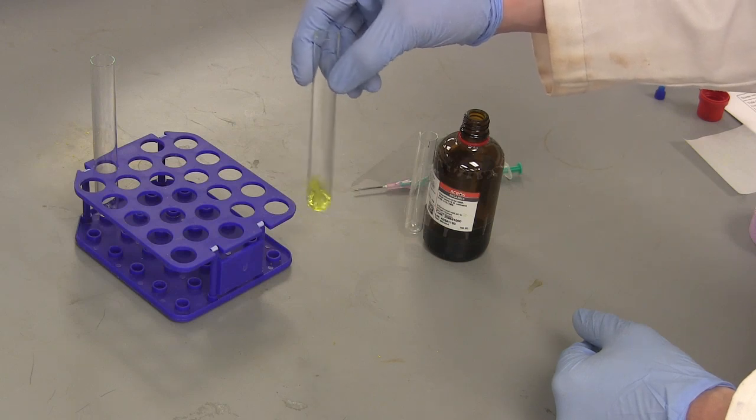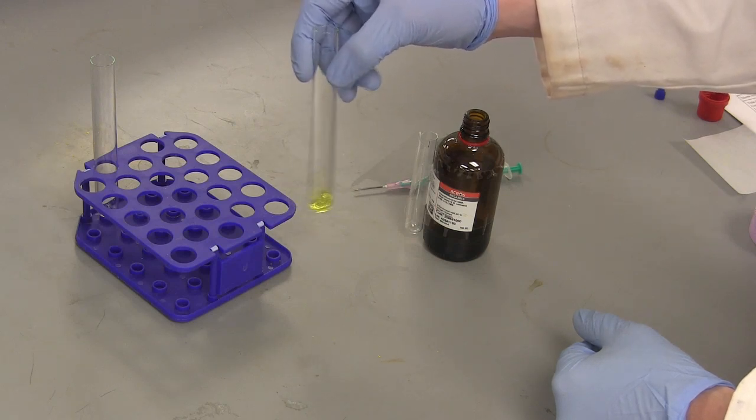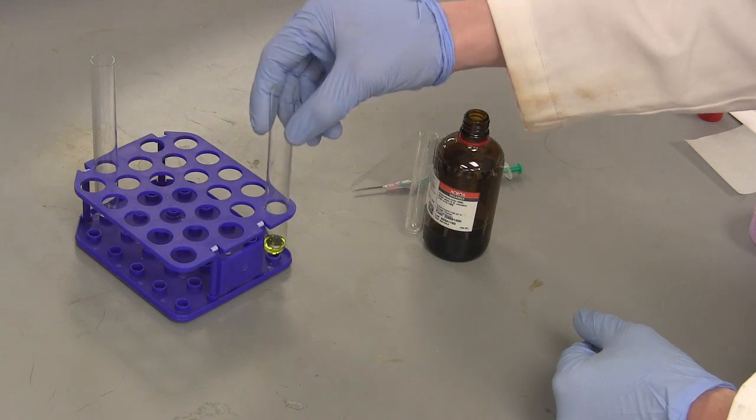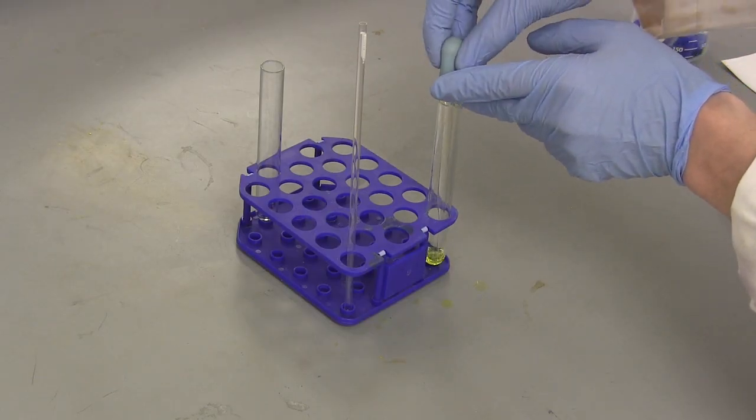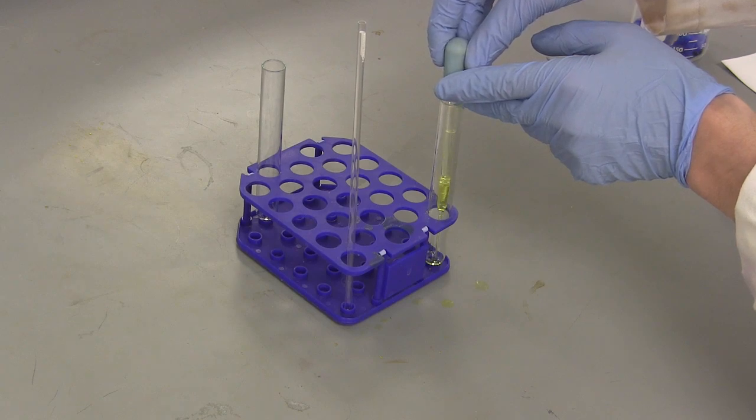Mix the tube around until the sample dissolves. Solids don't need to be fully dissolved, but be careful when extracting the sample. The solution can be extracted with the pasture pipette above any settled solids in the bottom of the test tube.